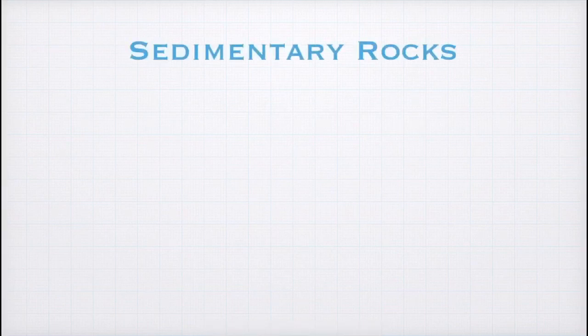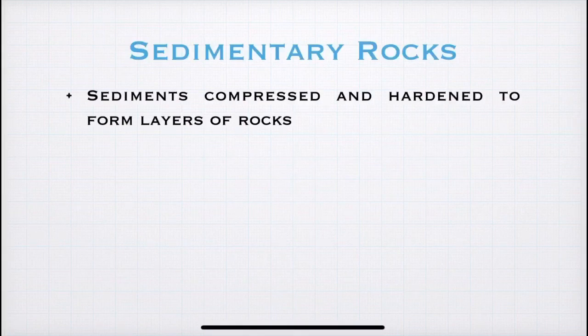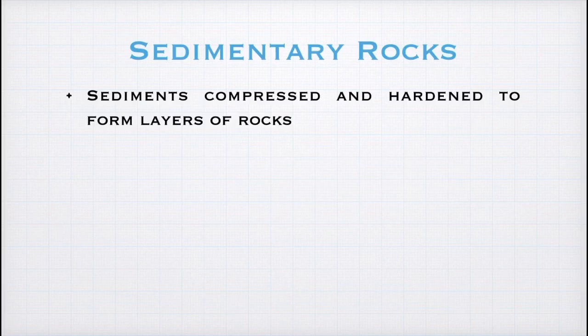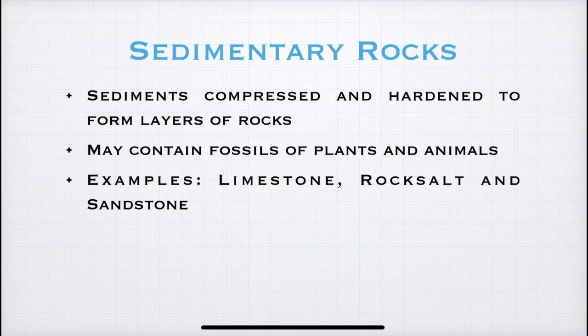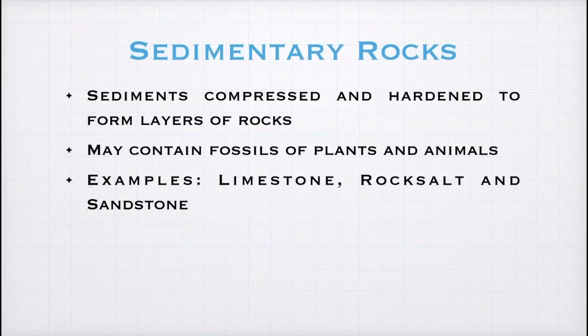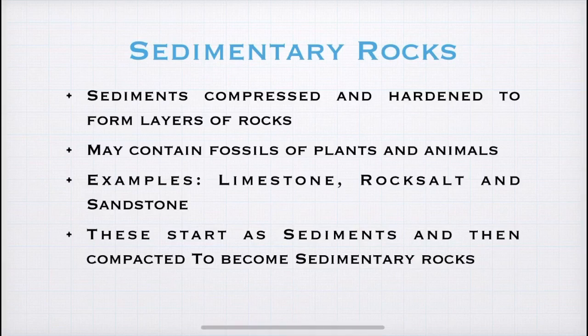So, now we will study about sedimentary rocks. So, what happens is when rock breakdowns into many small sediments, these sediments are transported from one place to another by either air or water. Hence, these sediments over the time are compacted and hardened to form sedimentary rocks. Now, sedimentary rocks may contain fossils of plants and animals. Also, examples of sedimentary rocks are limestone, rock salt and sandstone. Students, please take note that sedimentary rocks are the ones that can contain fossils of plants and animals. It is an important question. And finally, it's important to note that initially, these rocks are not rocks. They are sediments and then they are compacted to become rocks. Okay? I hope I am clear.